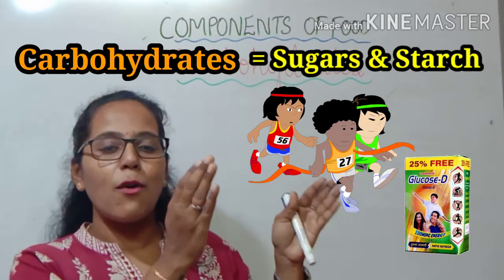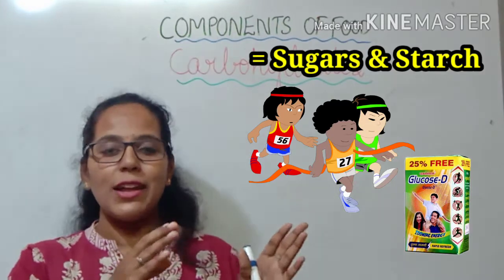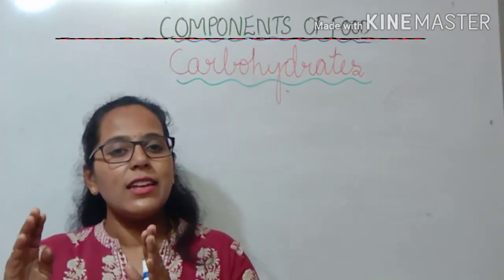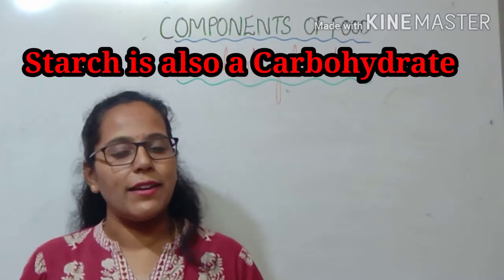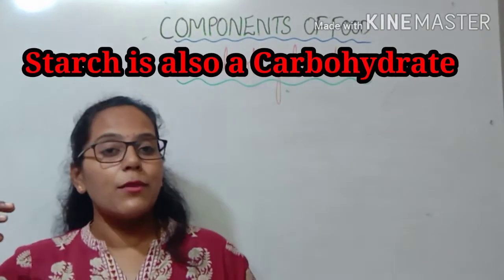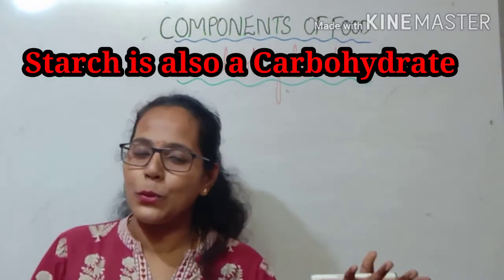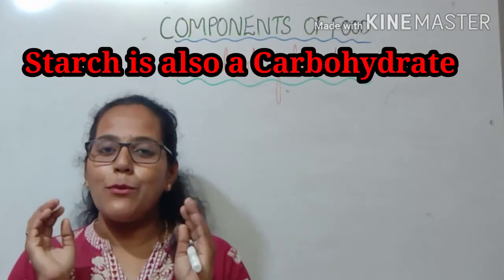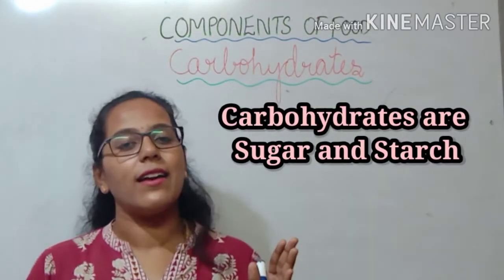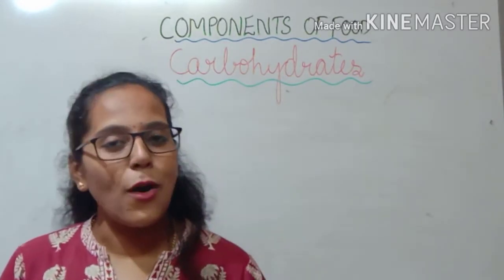Now you have understood sugar. Starch is a little bit more complicated. Starch is also a form of carbohydrate, but it is slightly complex. When we consume vegetables and fruits, we get starch — it is not as simple as glucose. So in a very simple way, carbohydrates are sugars and starch.